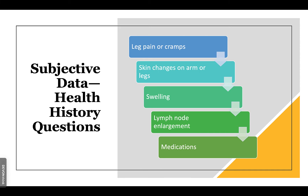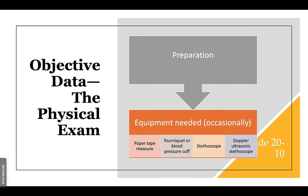Collecting our objective data and the physical exam: you'll want the following equipment — a paper tape measure that you can throw out and mark, a tourniquet or blood pressure cuff, a stethoscope, and a Doppler ultrasonic stethoscope.